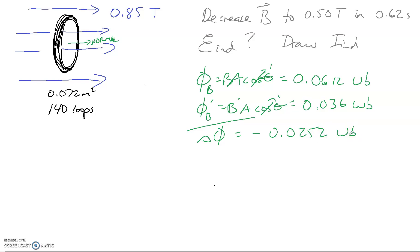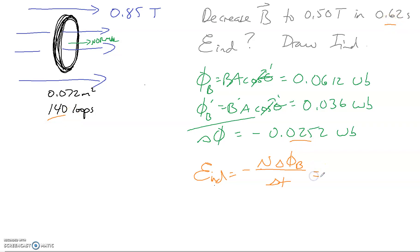Now to find the induced EMF, we use the expression: induced EMF equals negative N times the change in magnetic flux over change in time. We've got the N value of 140, our change in flux, and our delta T. The nice thing is our negatives cancel out, which makes it a little easier. Putting everything together, we get an induced voltage of around 5.7 volts.